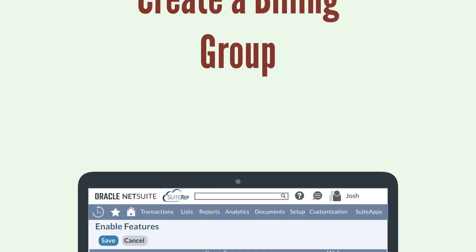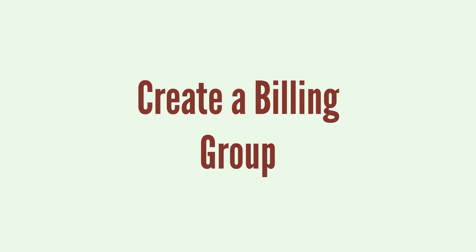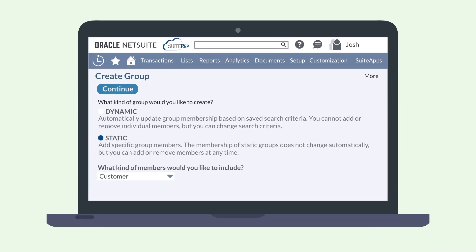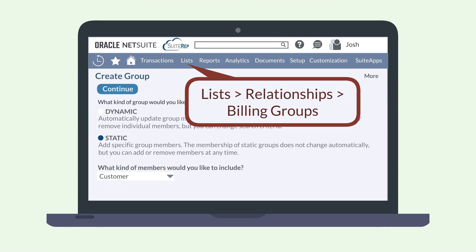When you do bill runs or create billing schedules, you have the option to select a customer billing group. So if you plan to use billing groups, you can create them at Lists, Relationships, Billing Groups.